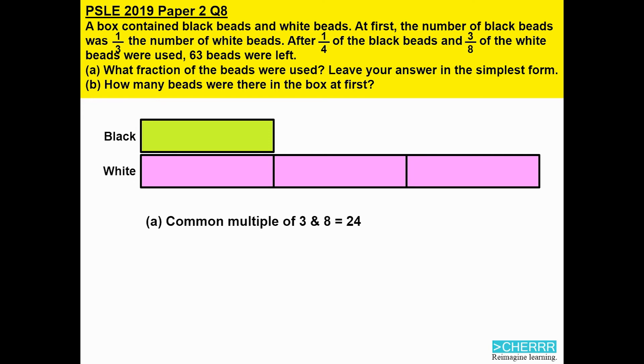That means in each box, what I need to do is I take 24 divided by the three boxes. Each box actually needs to be cut into eight parts.